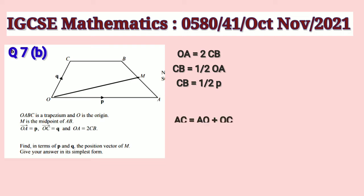AC is equal to AO plus OC, that is minus P plus Q. We have taken AO minus P because we are given OA is equal to P, so AO will be minus P.